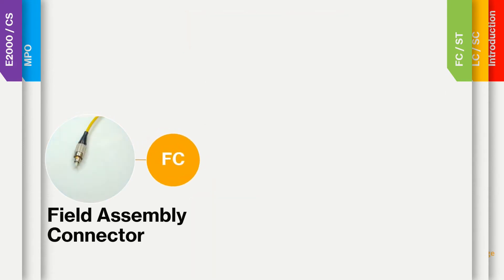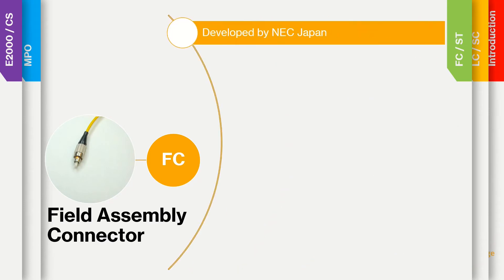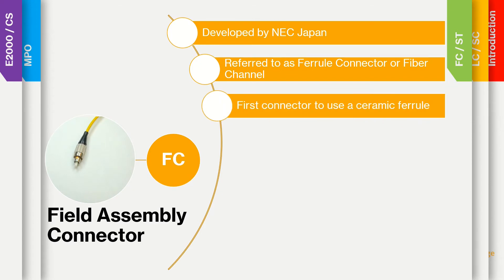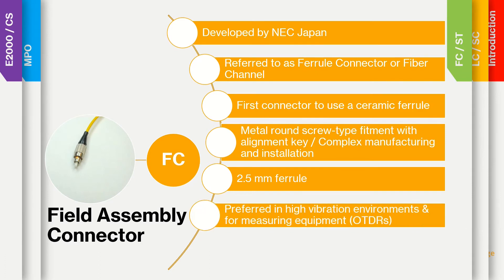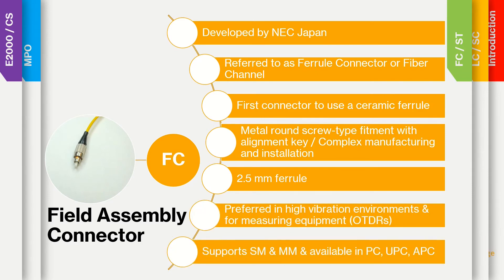The field assembly connector, FC — also referred to as ferrule connector or fiber channel — was the first connector to use a ceramic ferrule. This connector was developed by NEC in Japan. It has a round metal screw-type fitment with an alignment key that allows for an APC connector configuration. It has a 2.5 mm ferrule like the ST and SC connectors. It is known for good performance in high-vibration environments and is preferred for industrial applications and measurement equipment like OTDRs. The FC connector is available in single mode, multi-mode, and in PC, UPC, and APC polishes.